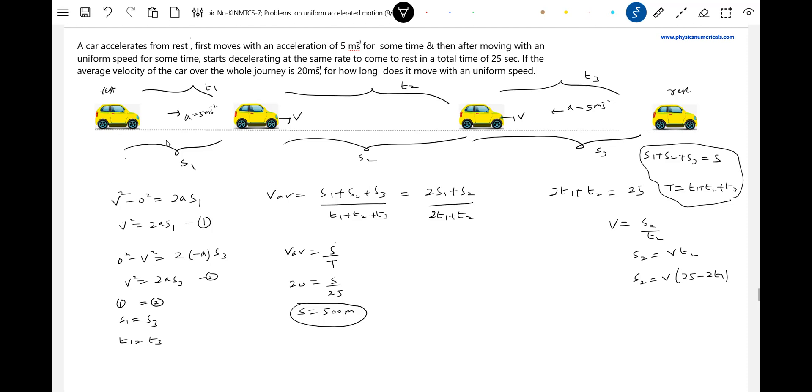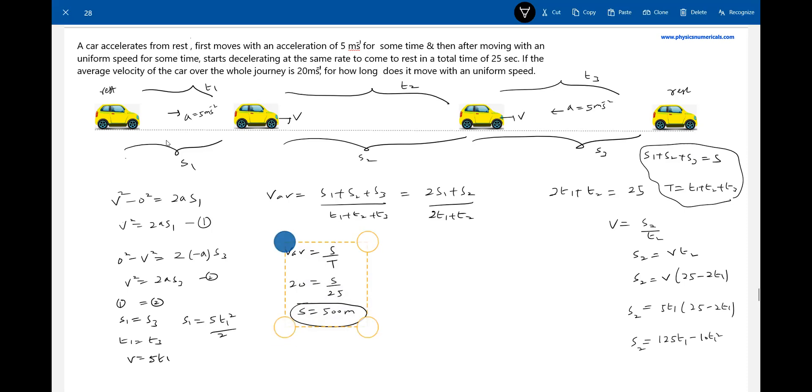We need only T2. If we can get that, the problem will be solved. What is the use of that acceleration? V equals 5T1 from uniformly accelerated motion. So this becomes 25 into 5T1 minus 10T1 squared. And S1 will be 5T1 squared by 2. I think almost our problem is over, we can solve it very easily.